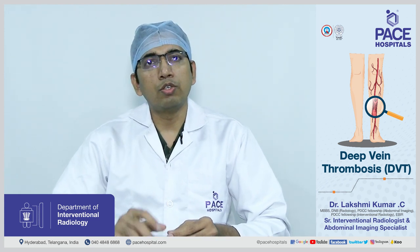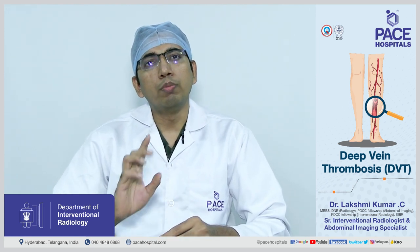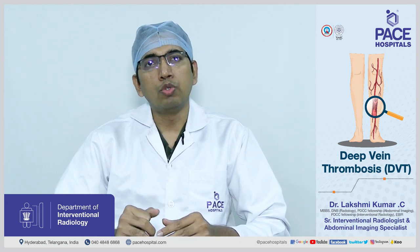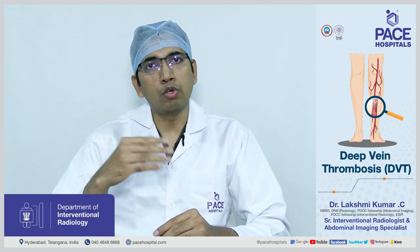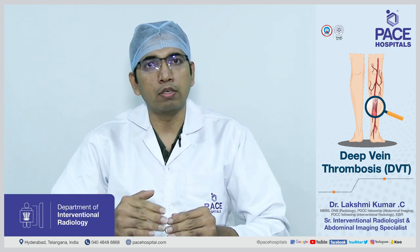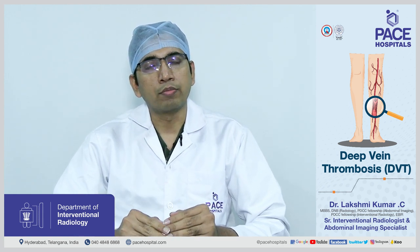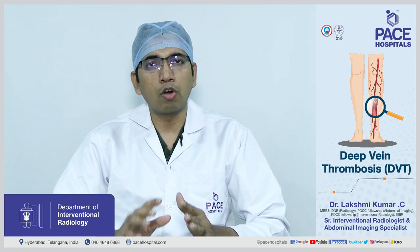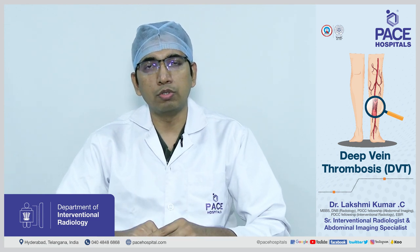In the legs, there are two kinds of veins: superficial veins and deep veins. Superficial veins are located close to the skin surface, whereas deep veins are located deeper within the leg. When the blood in the deep veins gets clotted, this is called deep vein thrombosis.